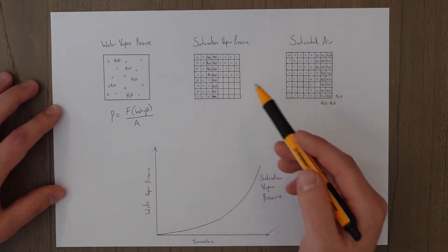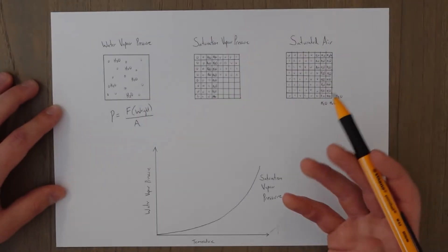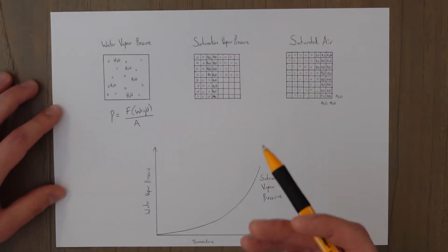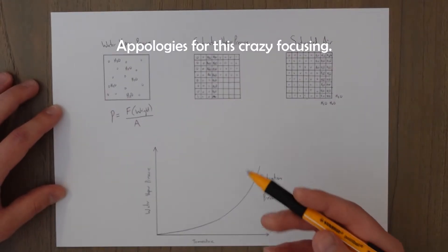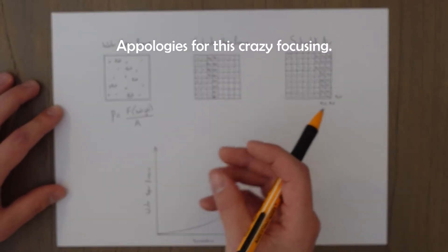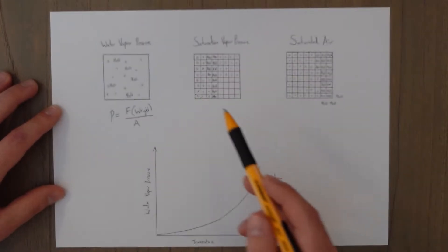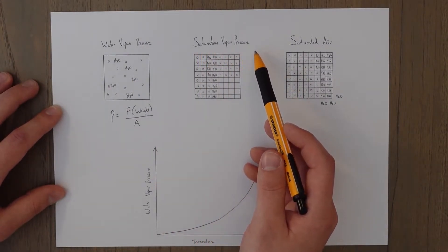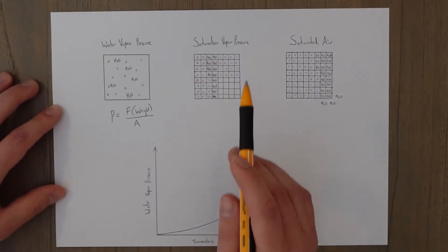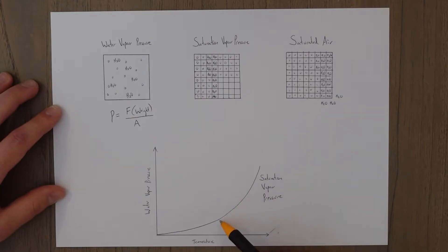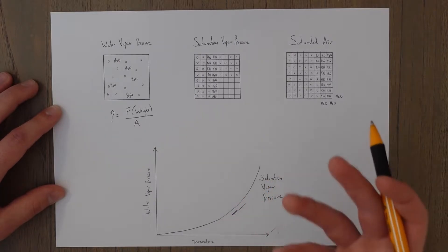The saturation vapor pressure varies according to the temperature. Energy in the form of heat is used to break the chains of liquid water molecules apart into individual molecules, which is what water vapor is. If the air is warmer there is more energy and the air can break these chains more easily. Warmer air can therefore hold more water vapor — it has a higher saturation vapor pressure than cold air. This is the theory behind cloud formation: water vapor rises into colder air, the saturation vapor pressure comes down to meet the level of actual water vapor pressure, and it condenses out and starts to form clouds.